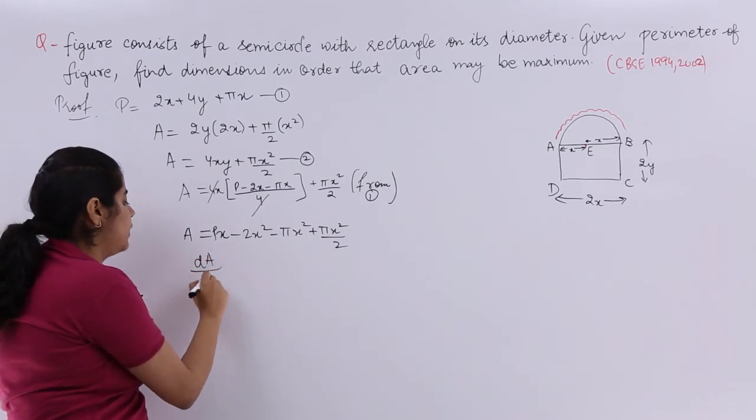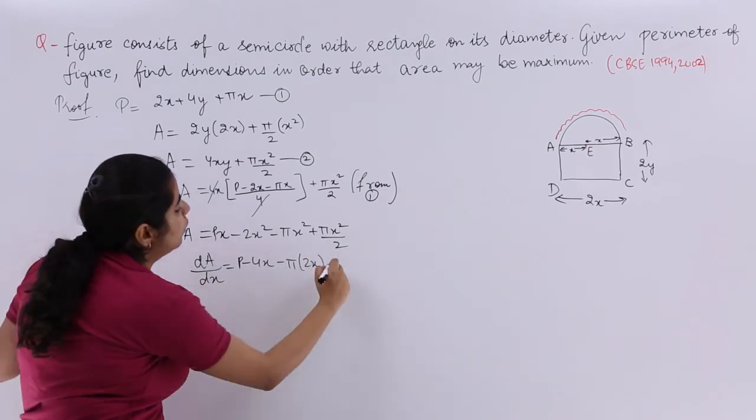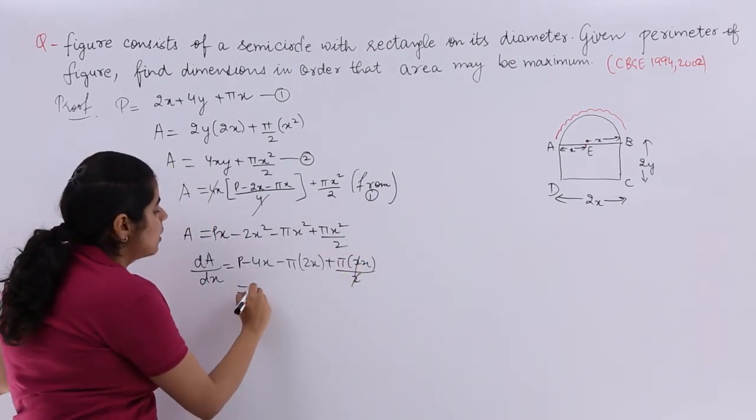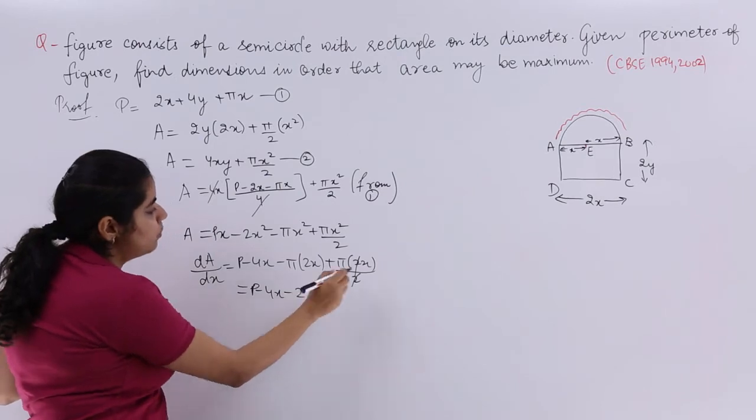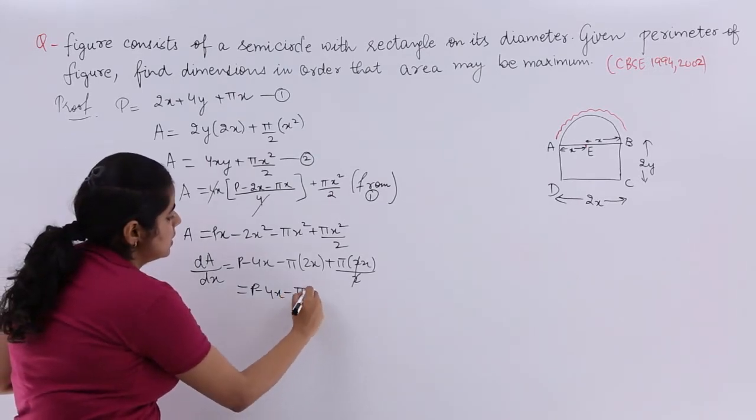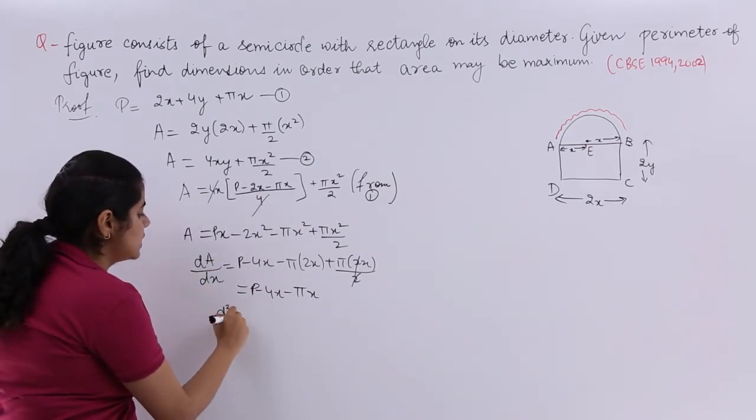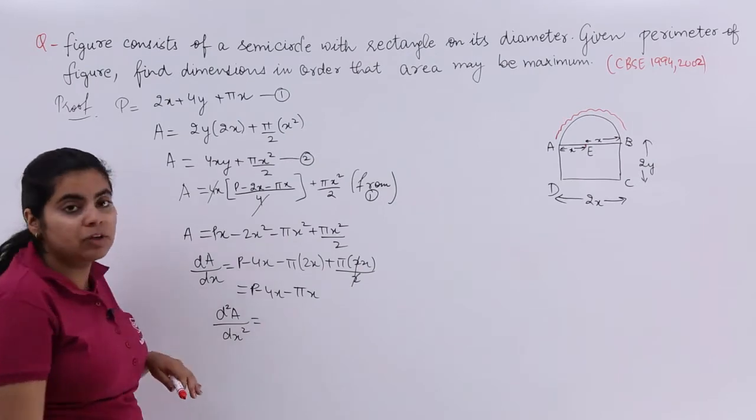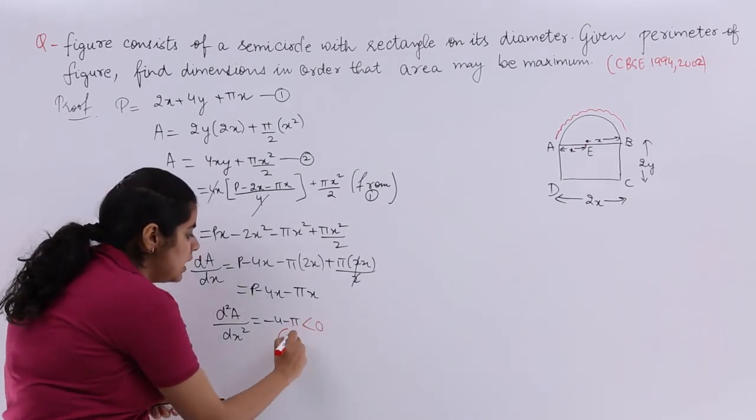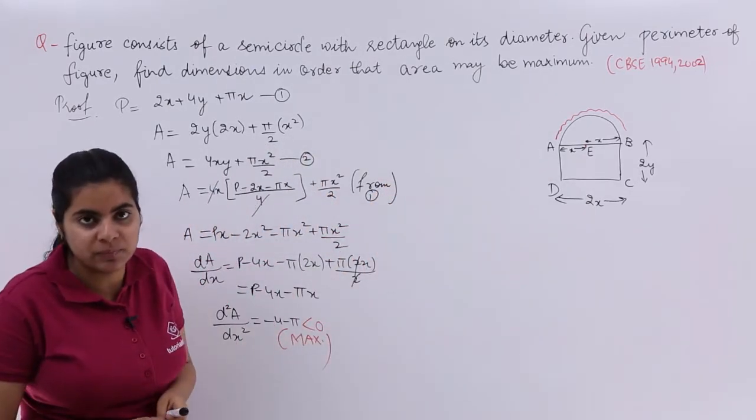And now first differentiation. Very easy to find out. P minus 4x minus π into 2x plus π into 2x upon 2. Again 2, 2 getting cancelled. So it becomes P minus 4x minus 2πx plus πx which is nothing but minus πx. And now first order derivative has been found out. Let us now find out the second order derivative. It will be minus 4 minus π. Something coming in negatives. Negative means it is less than 0. Less than 0 means maxima. And we need it to prove maximum.